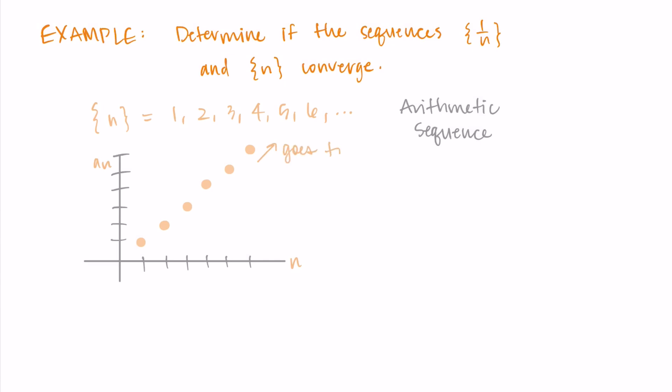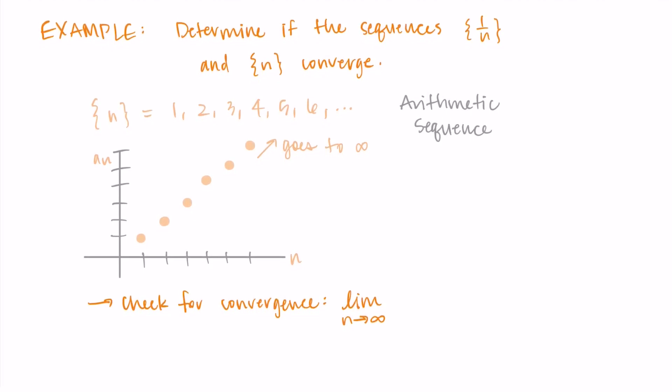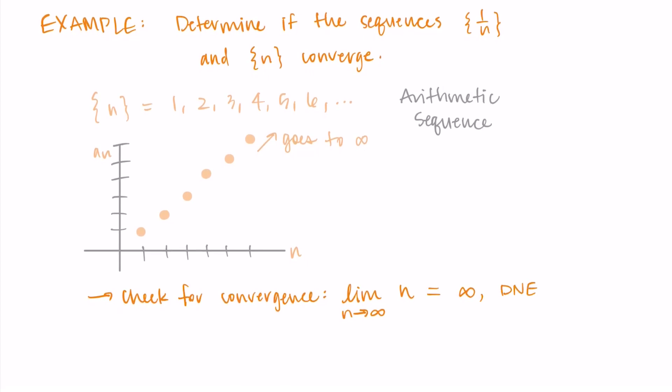As n increases, so do the sequence values. So we see that this is going off to infinity. And we can do it more formally with a limit. So the limit as n approaches infinity of n is just infinity. So this limit does not exist. This means that the sequence n diverges.